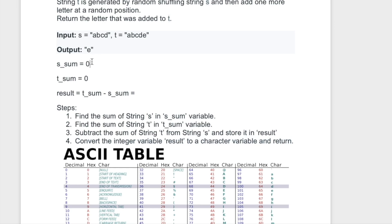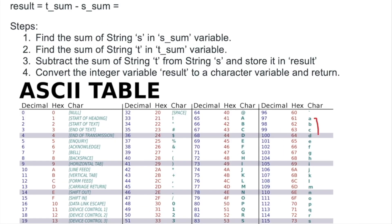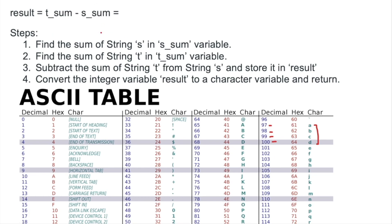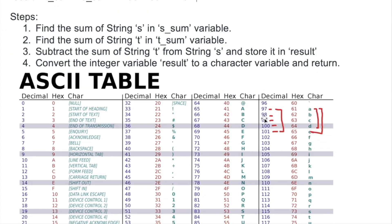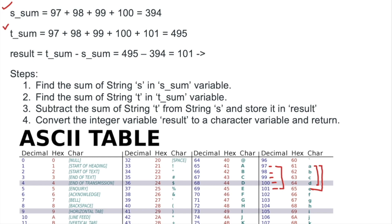Let's walk through the example. For string s, we add a + b + c + d. 'a' has ASCII value 97, 'b' is 98, 'c' is 99, and 'd' is 100. Adding these gives s_sum = 394. String t consists of five letters, so we add those five ASCII values to get t_sum = 495. Subtracting: 495 minus 394 equals 101, and in the ASCII table 101 is the letter 'e'. We convert the integer 101 into the character 'e', which is the extra letter and our output.